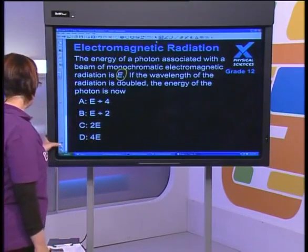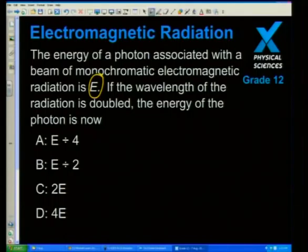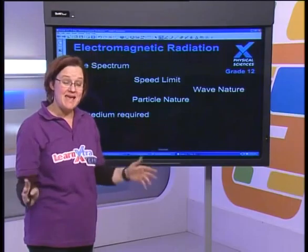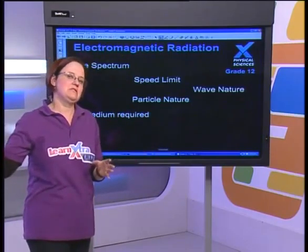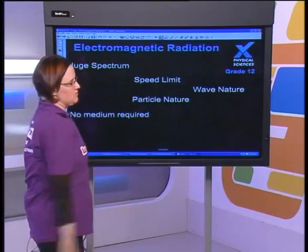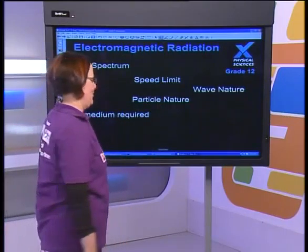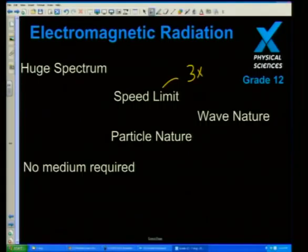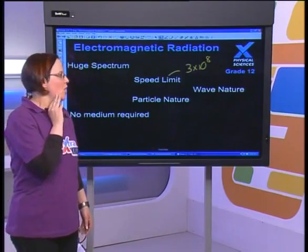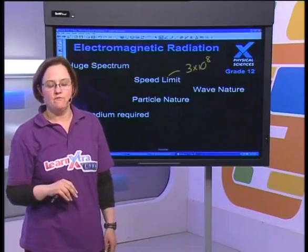What makes the electromagnetic spectrum so special? Number one, it has a huge spectrum — we've classified it into seven main parts. It creates what we call a natural speed limit, which is three times ten to the eight. There was some stuff in the news recently about the possibility that things can travel faster than the speed of light, but scientists are still working on that.